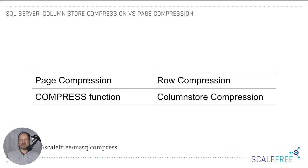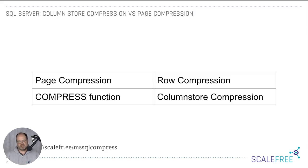Always turn on page compression on all tables — because in the end, you store less data, and when you query it you have to move less data from disk into memory, so it becomes faster. Yes, there is some overhead to compress and uncompress the data, but the I/O performance savings essentially outweigh that.